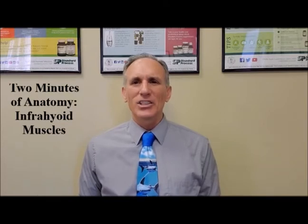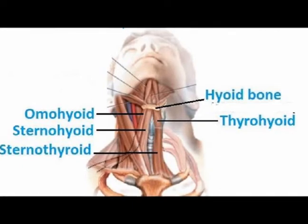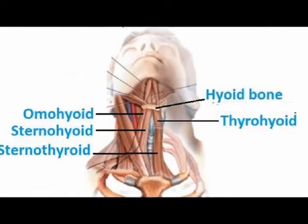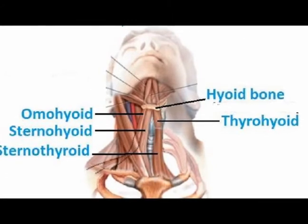This is a group of four muscles whose primary function is to depress the hyoid bone during speech and while swallowing. These four muscles include the omohyoid muscle, the sternohyoid muscle, the sternothyroid muscle, and the thyrohyoid muscle.